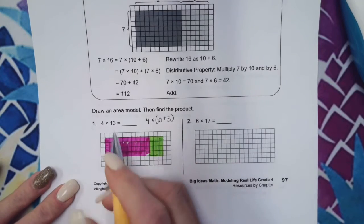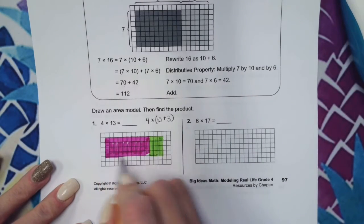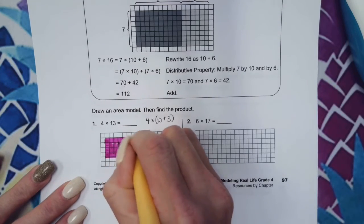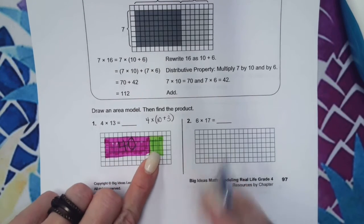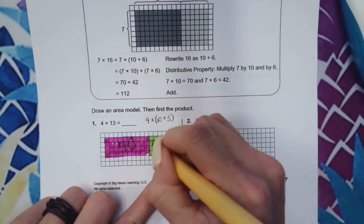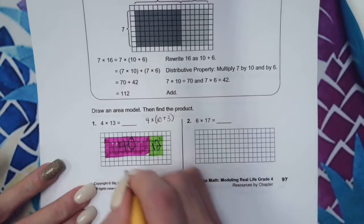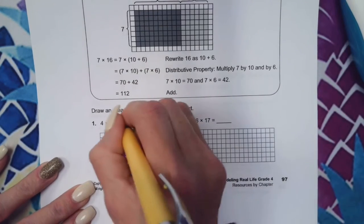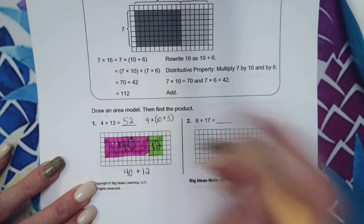What is 4 times 10? In other words, how many squares are in here? 40. Good, 40 right there. And then how many squares are going to be in here? In other words, 3 times 4? 12. So now I can simply add 40 plus 12 to get 52.